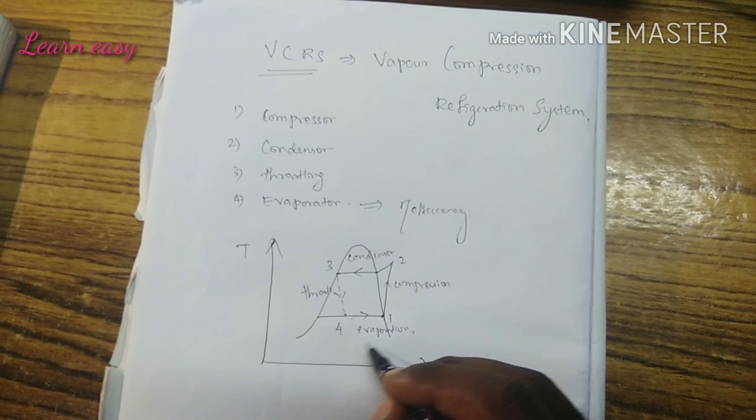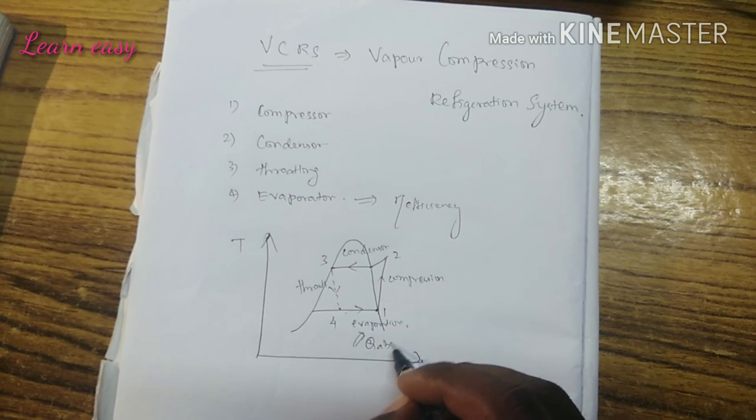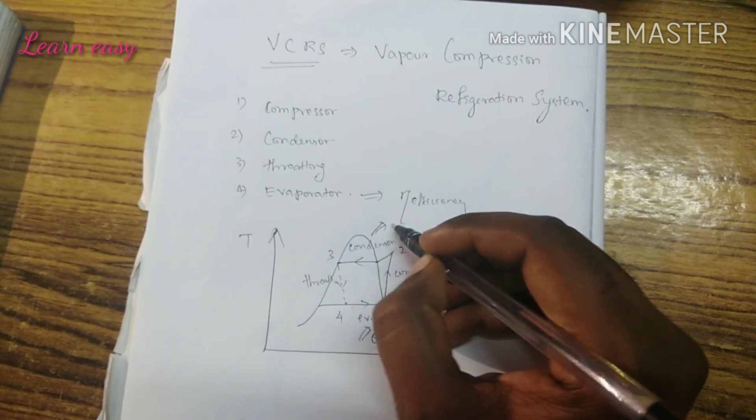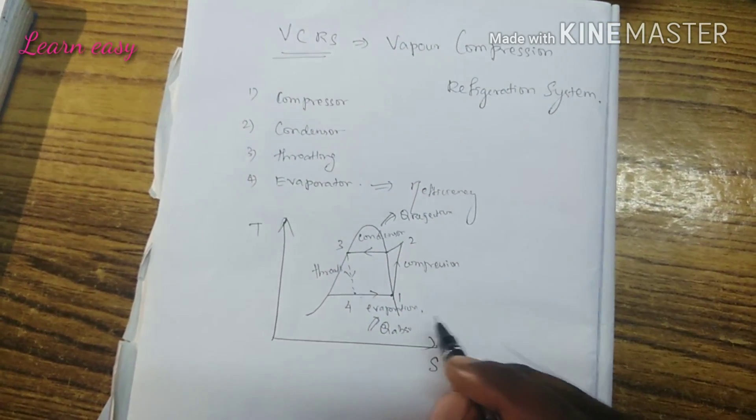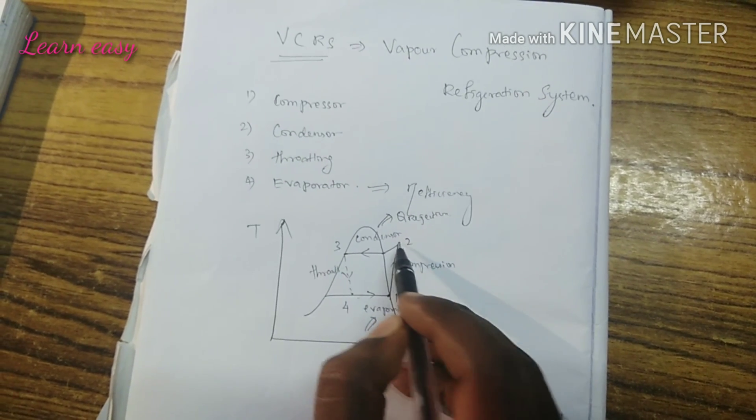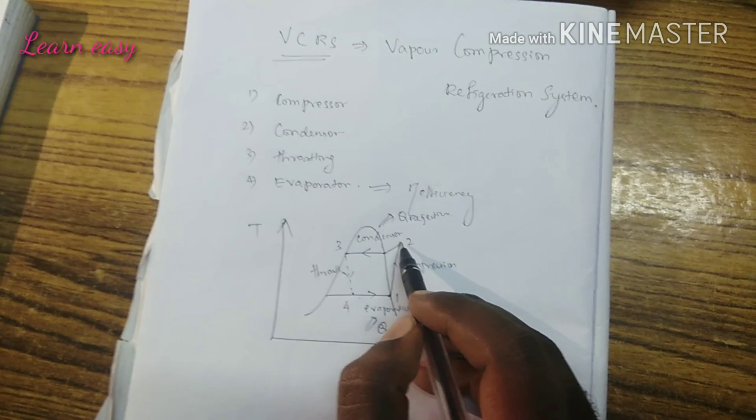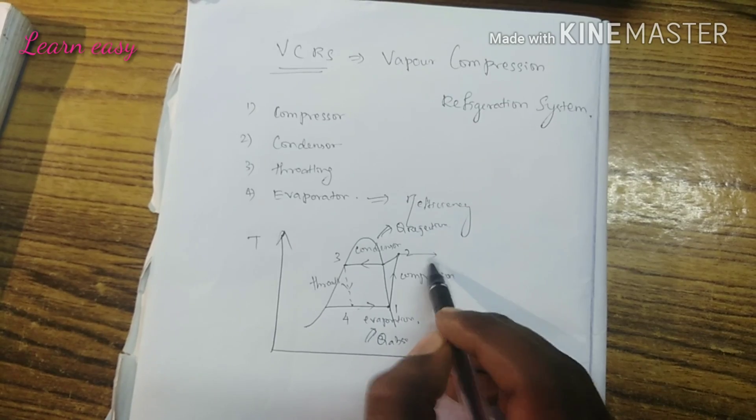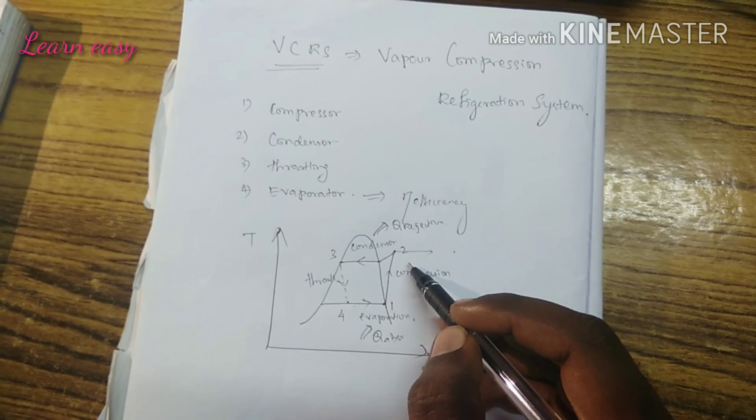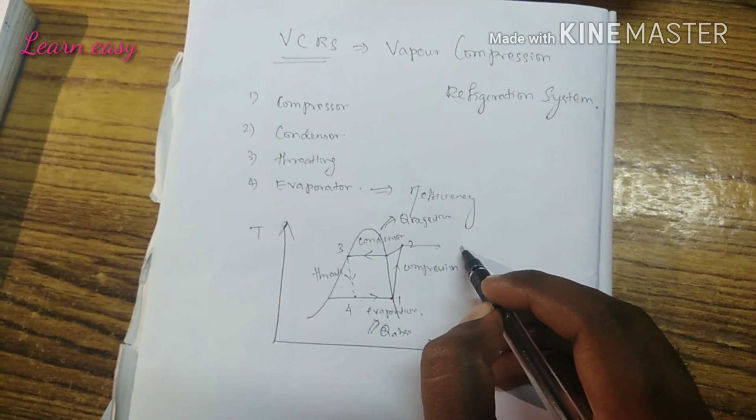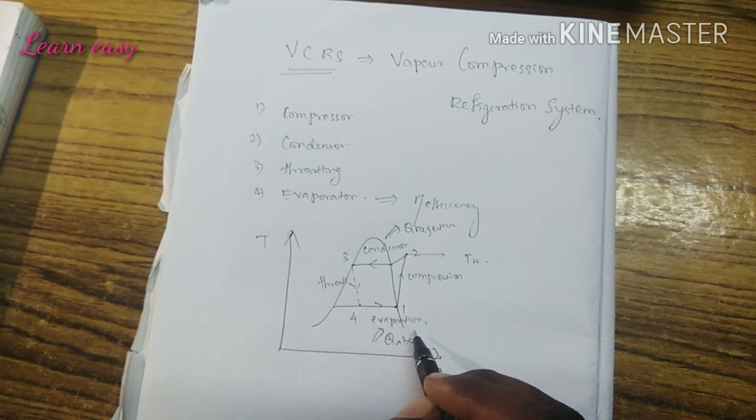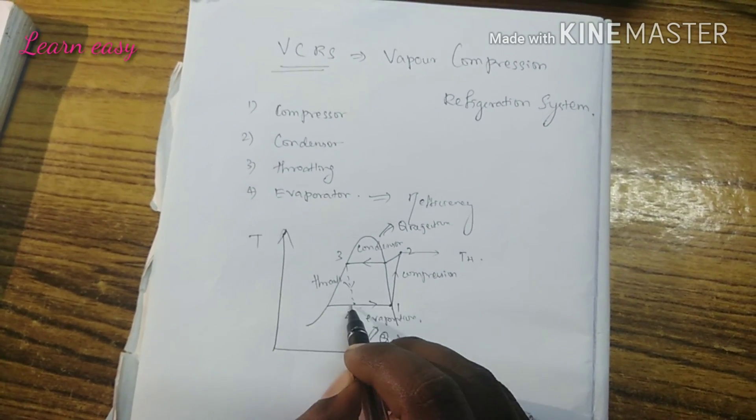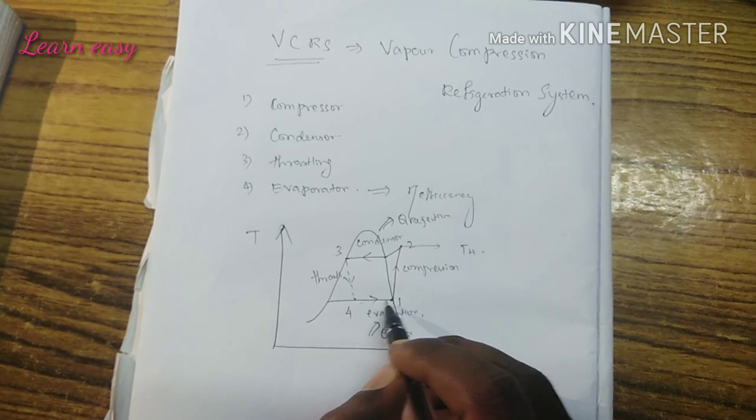In the evaporator, heat Q is absorbed, while in the condenser Q is rejected. At point 2, at the end of compression, you get the high temperature T higher. The low temperature T lower is obtained from the evaporator. Points 1 and 4 are at constant temperature.